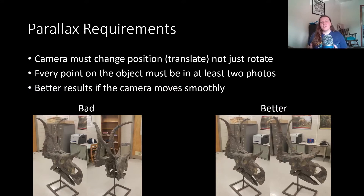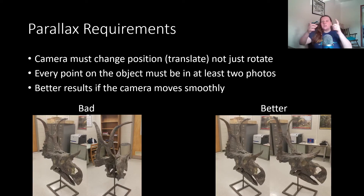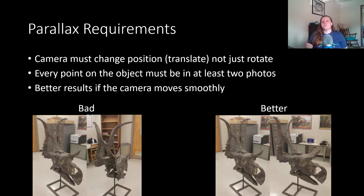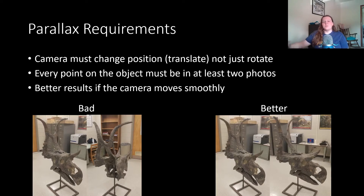Parallax has some slightly different requirements. The main key is that the camera has to be changing position and not just rotating relative to the object. We'll go into the two different ways you can set up your photogrammetry. The main thing is that you cannot just sit and rotate a camera around — you have to be physically moving it, or physically moving the specimen relative to the camera. Another important principle is that every point on the object is visible in at least two photos, and preferably three to four. You really want a lot of coverage and smooth coverage so the program has a chance to interpolate between photographs.